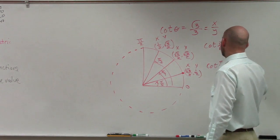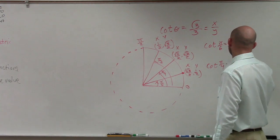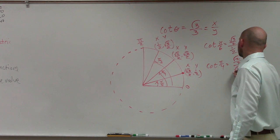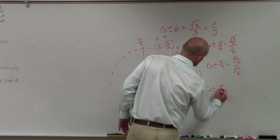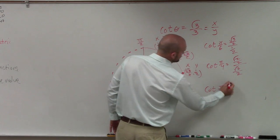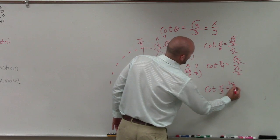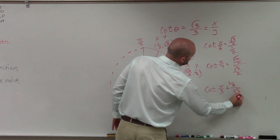equals square root of 2 over 2 divided by square root of 2 over 2. And the cotangent of pi thirds equals 1 half divided by square root of 3 over 2.